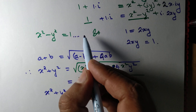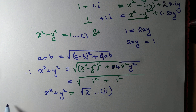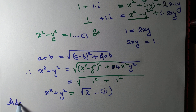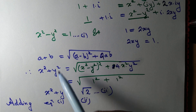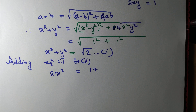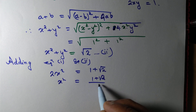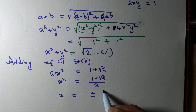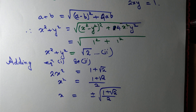Can we solve x and y from these two equations? Of course yes. Adding equation 1 (x² - y² = 1) and equation 2 (x² + y² = √2), the y² terms cancel, giving 2x² = 1 + √2. So x² = (1 + √2)/2, and x = ±√((1 + √2)/2).